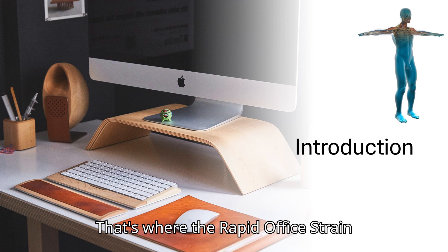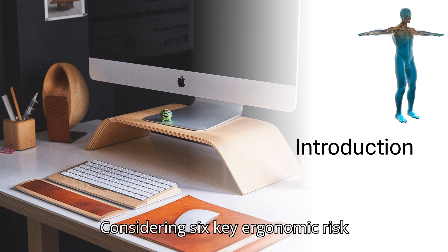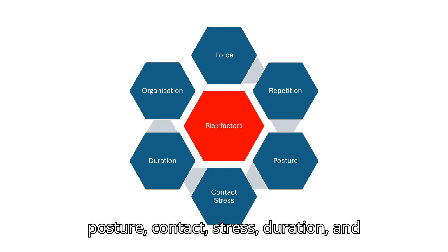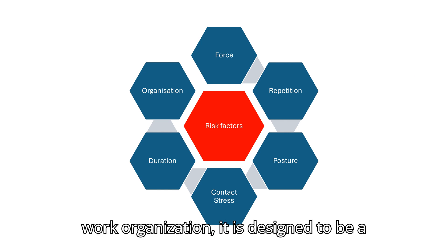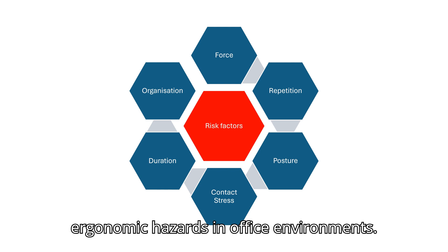That's where the Rapid Office Strain Assessment, or ROSA, comes in, considering six key ergonomic risk factors: namely force, repetition, posture, contact stress, duration, and work organization. It is designed to be a quick and practical tool for identifying ergonomic hazards in office environments.